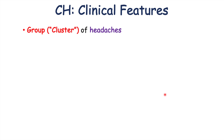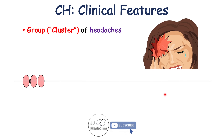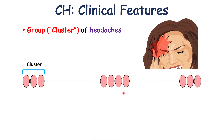Cluster headaches occur in groups or clusters. Over a patient's lifetime, they will have clusters of headache attacks with periods of remission in between. A cluster will occur over a particular period of time, followed by a remission with no signs or symptoms, and then another group or cluster will begin again.